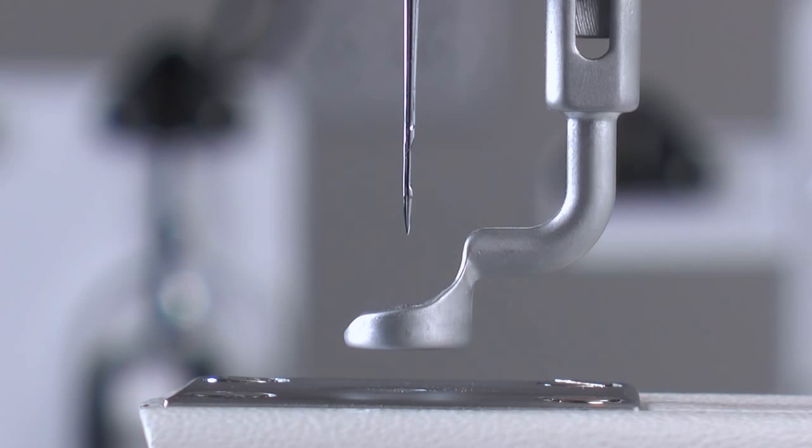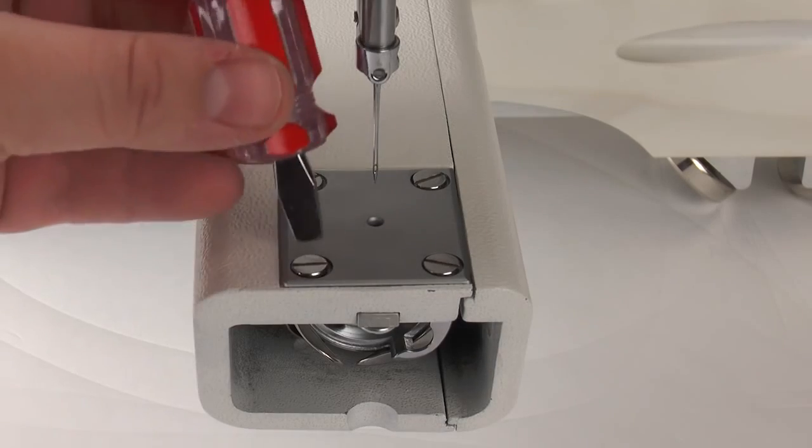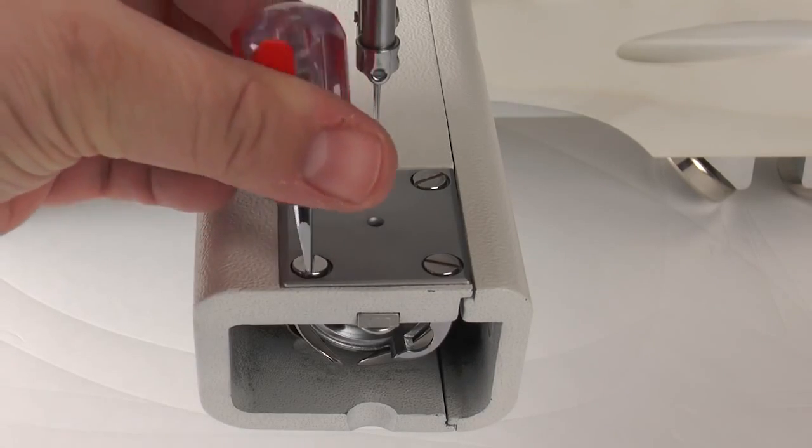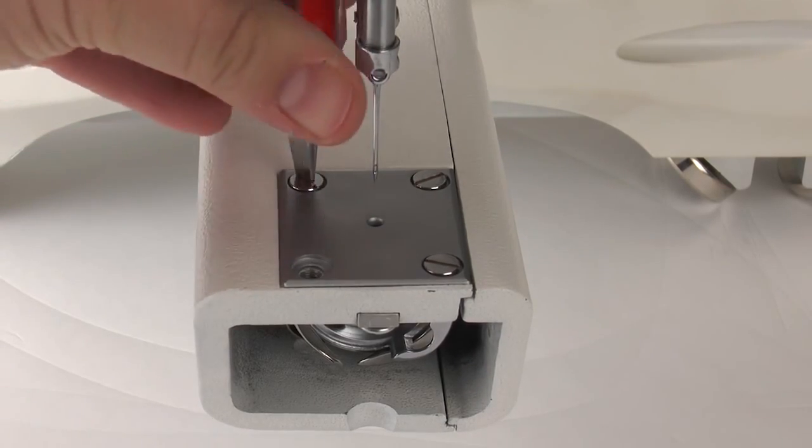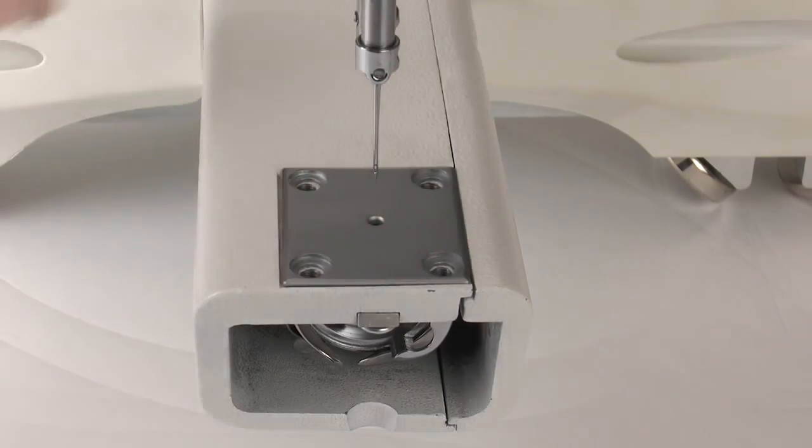To make seeing the steps of this video easier, we've removed the hopping foot. This is not a required step. Using the small screwdriver that came with the machine, unscrew all four screws around the needle plate and then remove the needle plate.